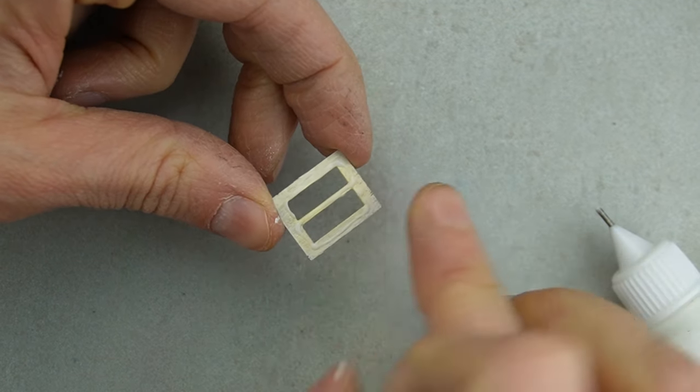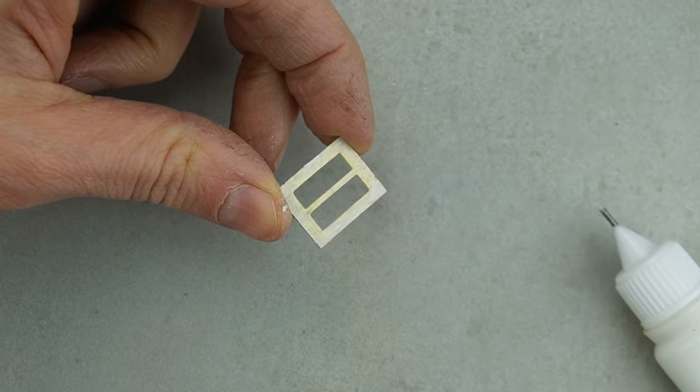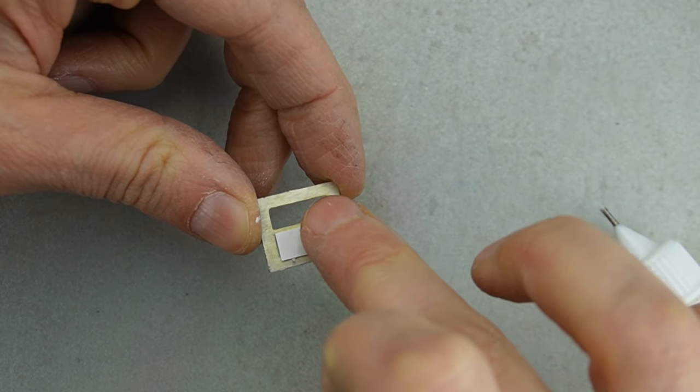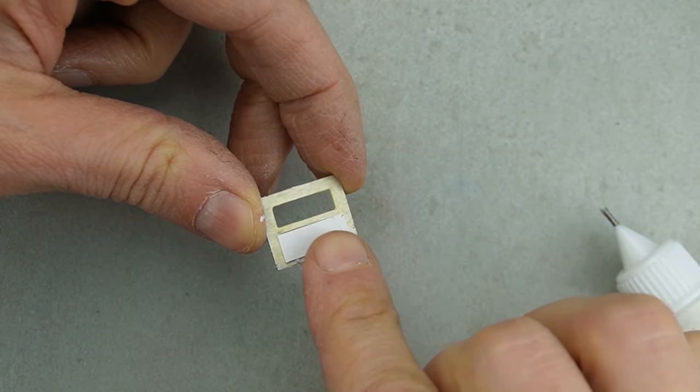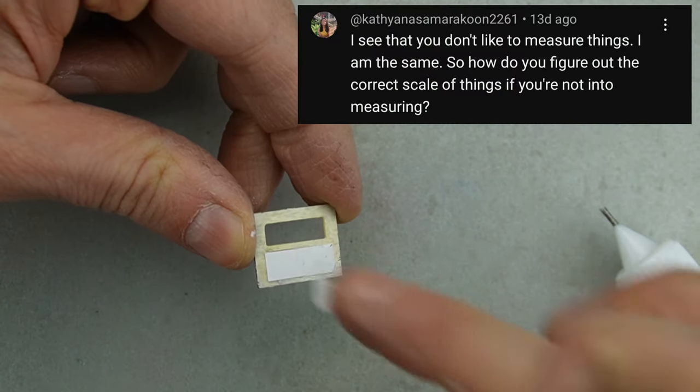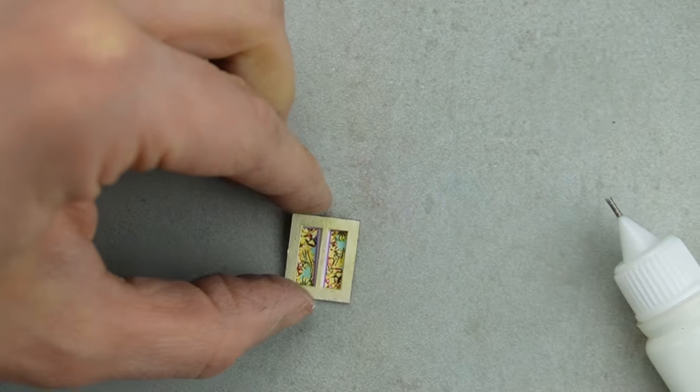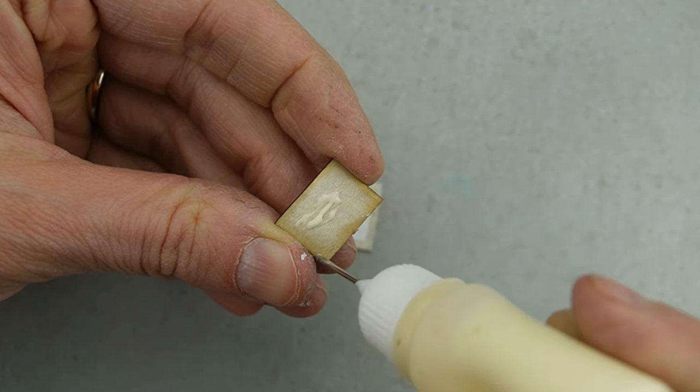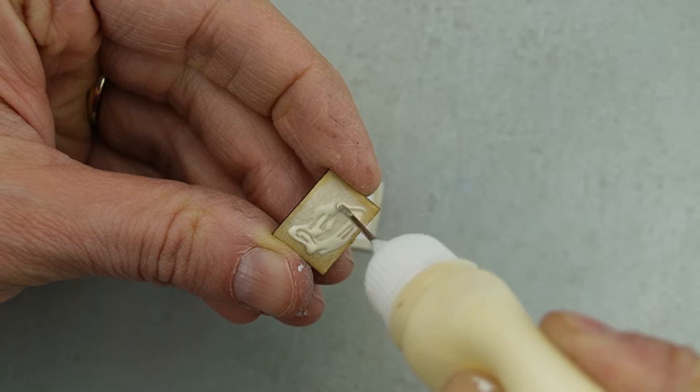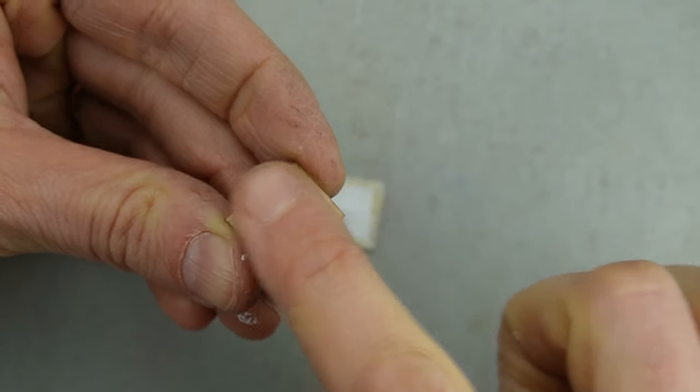When I make minis today, I just do the damn thing and if some of them look wonky or goofy, I hide them in the back and put the better accessories up front. I have a very casual, laid-back approach to making minis, and part of that is not liking to measure things. When it comes to making 1:12 scale items, I'm able to just eyeball it and they turn out to be the right size.